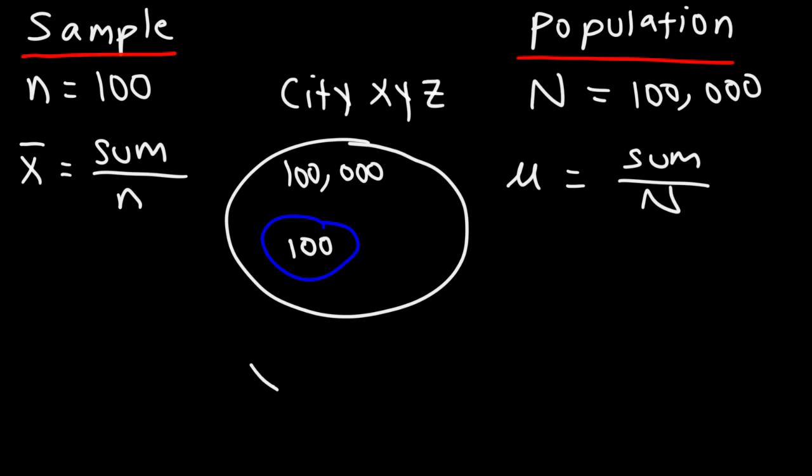Ideally, we want the sample mean to be as close as possible to the population mean. And as we increase the sample size n, the sample mean will approach the population mean. So let's say if we increase the sample size from 100 to 1,000, we can get a better estimate of the population mean if we do that.